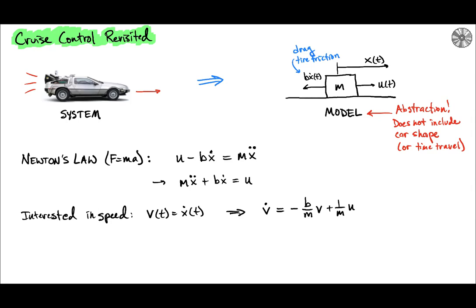As with many systems, we'll start with Newton's law: force equals mass times acceleration. The net force is the applied force u minus the drag, which opposes the motion. So u - bẋ = mẍ, where ẍ represents acceleration. If we reorganize, we get all the x terms on the left-hand side and the forcing term u on the right-hand side.